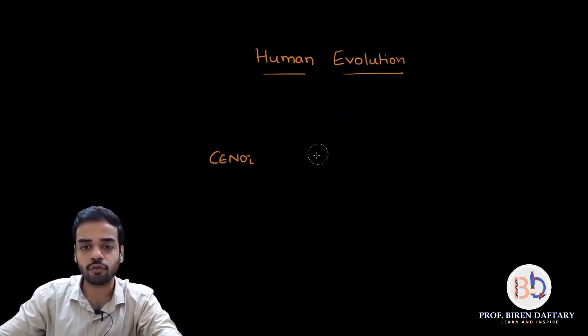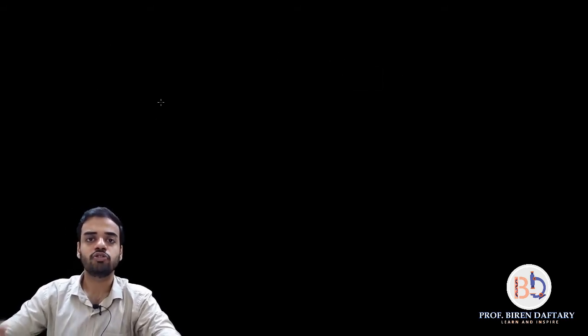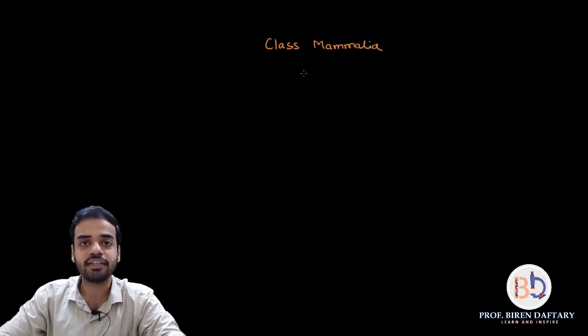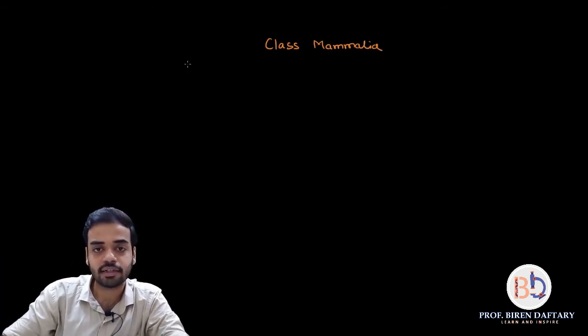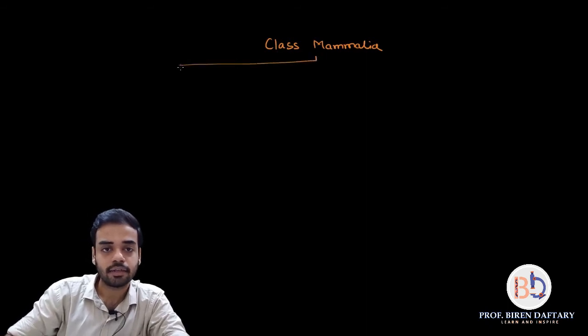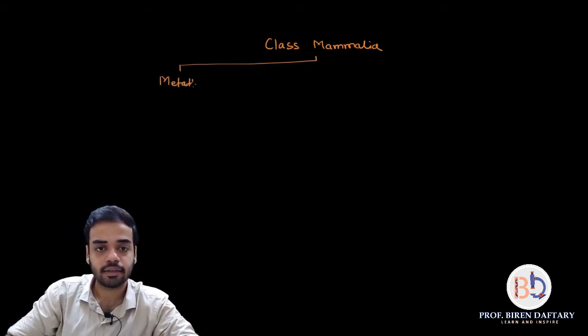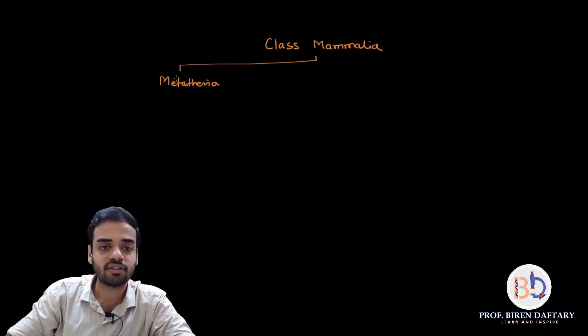Now I'm going to draw a flowchart showing the diversification of Class Mammalia — a branch tree structure to help you understand how we, monkeys, and apes have evolved. Starting with Class Mammalia, it is further divided into three subclasses.